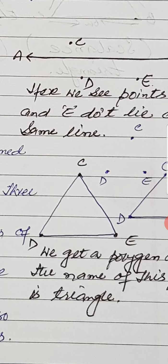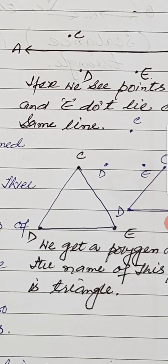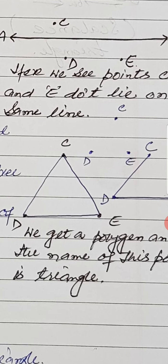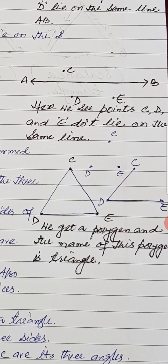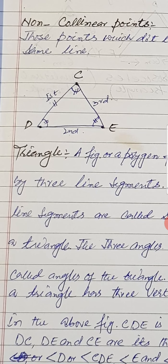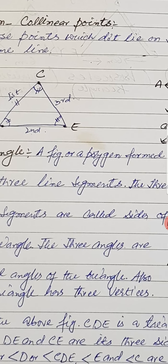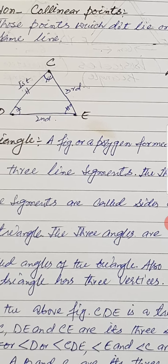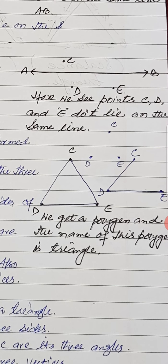When we combine these three line segments, we get a polygon, and the name of this polygon is triangle. So what is a triangle? A triangle is a figure or a polygon formed by three line segments.